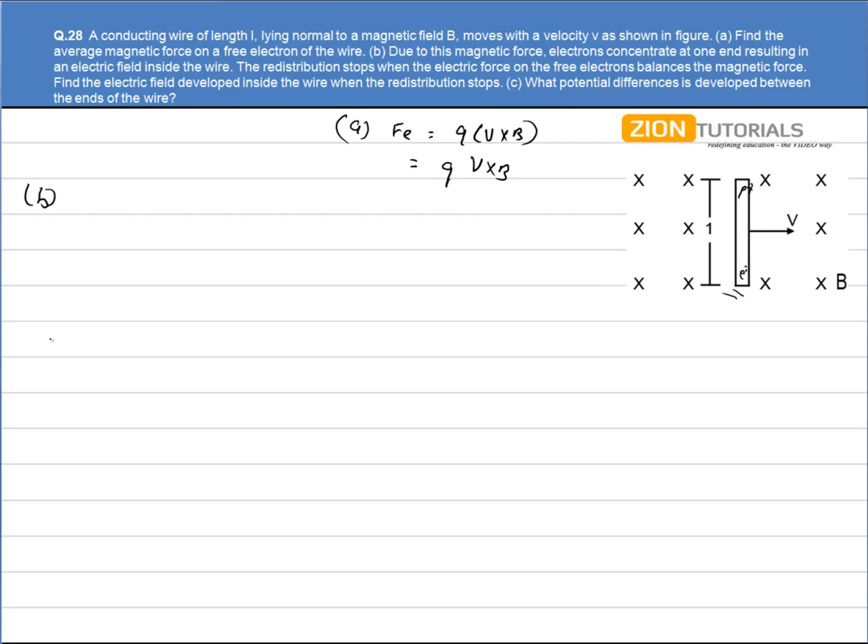If an electric field is generated along the rod, then the charges at the center will experience a magnetic force as well as an electric force. We have to calculate the electric field developed inside when the redistribution stops, when the magnetic force is equal to the electric force. Magnetic force is QVB and electric force is QE, so the electric field developed will be equal to VB.